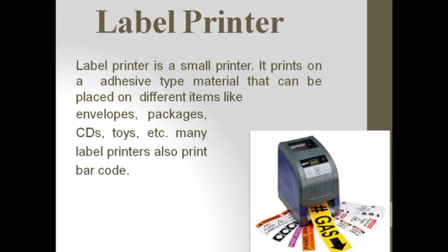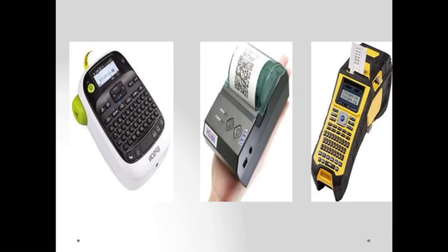The next is the label printer, a small printer that prints on adhesive-type material that can be placed on different items like envelopes, packages, CDs, toys, etc. Many label printers also print barcodes. Here you can see examples of different label printers, including machines through which we can swipe our cards.